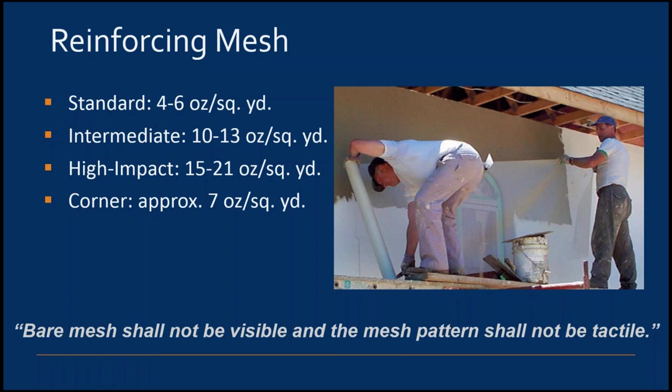The reinforcing mesh is an integral part of EIFS. It provides crack resistance, impact resistance, and helps determine the proper thickness of the base coat. There are several varieties and densities of mesh: standard for the field of the wall, intermediate and high impact for areas prone to extraordinary loading such as vehicular impact, and corner mesh used at inside and outside corners. It is very important that the reinforcing mesh is embedded into the wet base coat and completely encapsulated on both sides. According to ASTM C-1397, bare mesh shall not be visible and the mesh pattern shall not be tactile.